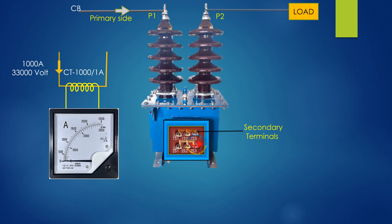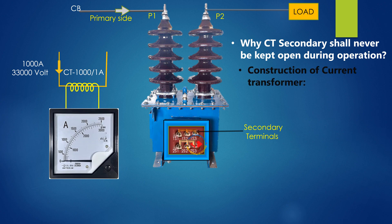Now we have the subject of discussion: why CT secondary shall never be kept open during operation. Open circuited CT can cause serious safety concerns like fire, electrocution and saturation of CT, thus protection failure. Therefore, we must ensure that CT secondary should always be kept short circuited. Let us now understand the CT construction and its working principle to know why the CT must not be open circuited.